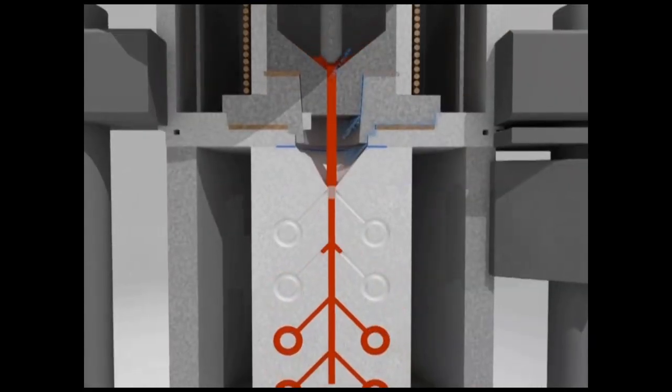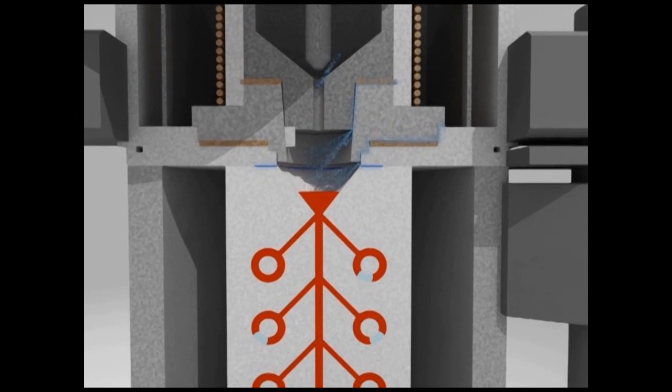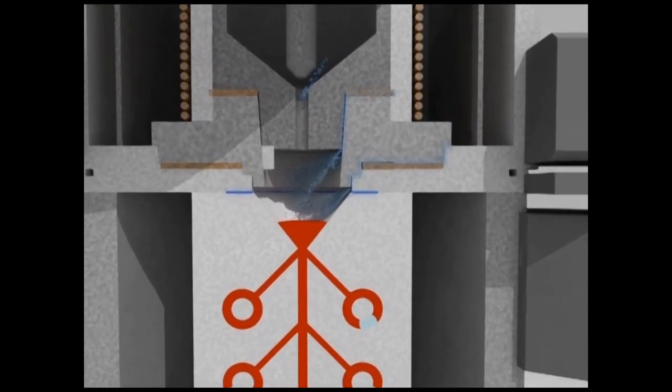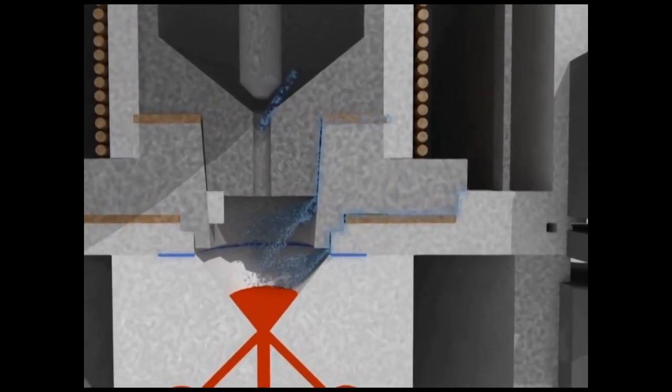But when the crucible gasket and sealing are worn after a few castings, the gas pressure goes through the crucible ceramic holder and is absorbed by the metal.